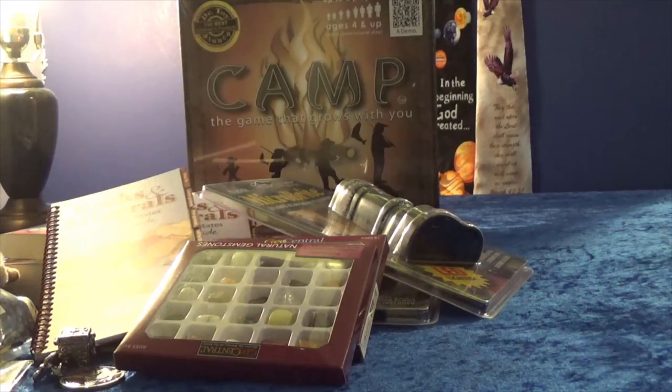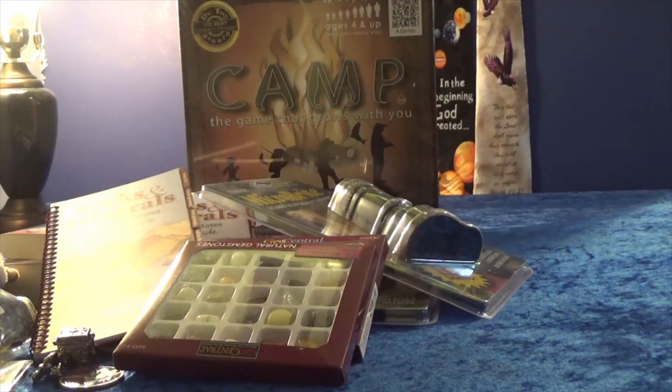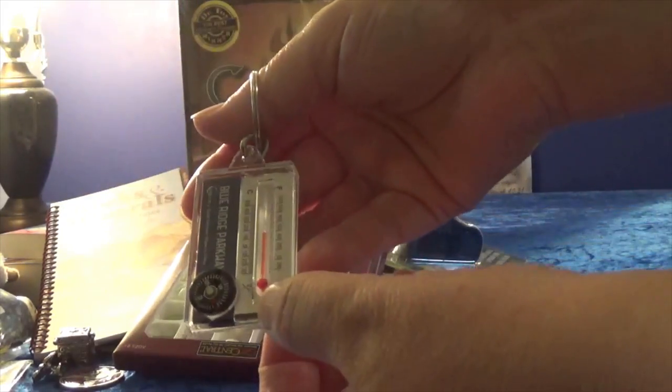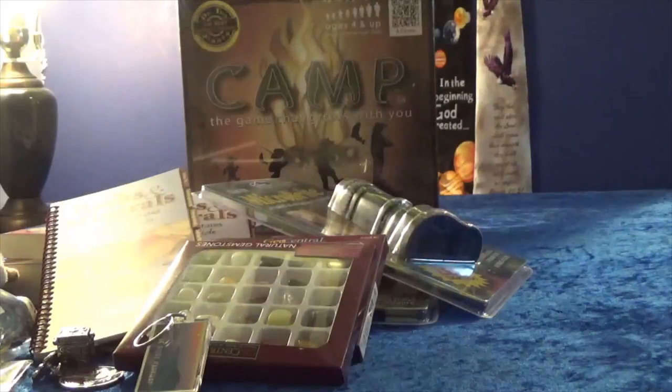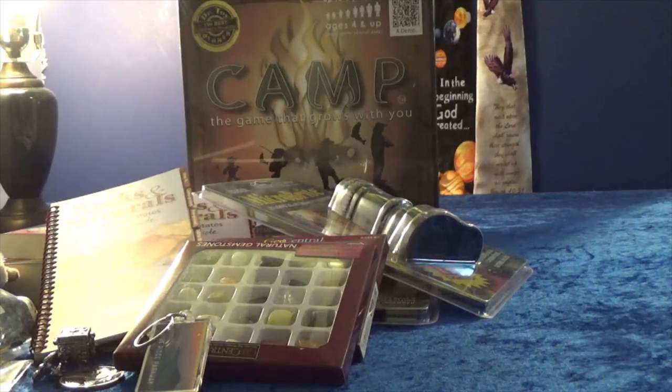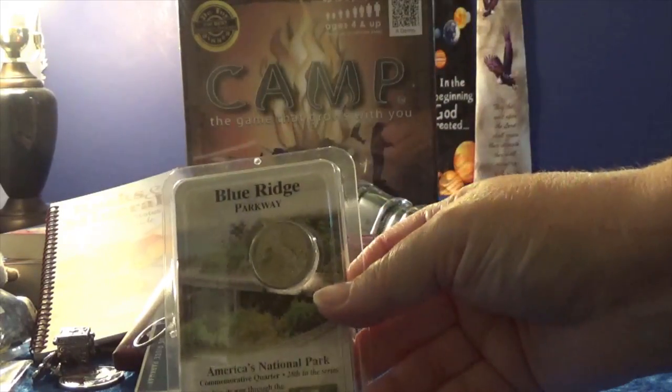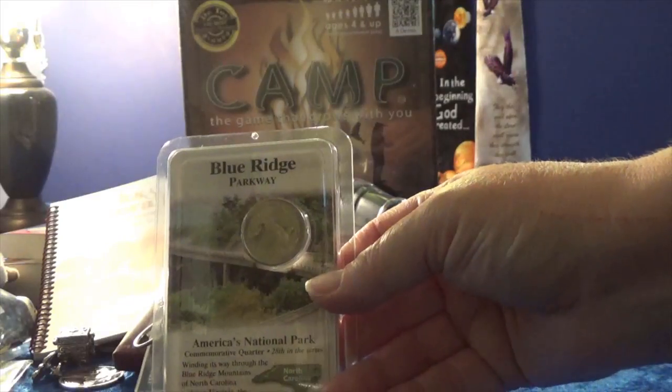We also went up on Mount Mitchell. Mount Mitchell is the highest peak east of the Mississippi. Shelby decided she kind of wanted this little keychain and on the back it has a temperature gauge and a compass, so we need to make sure she takes that with us whenever we go geocaching so we've always got a compass with us.